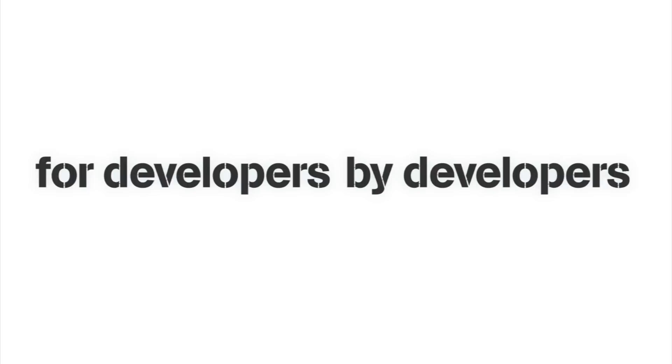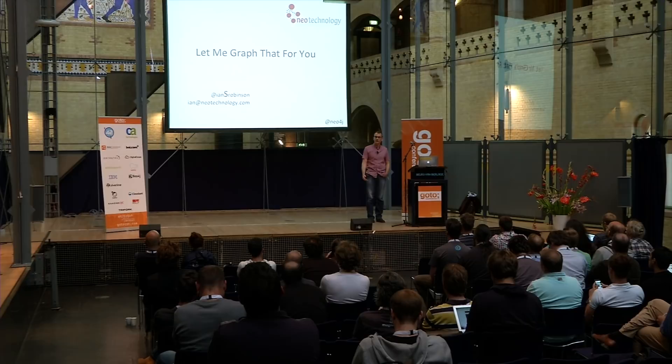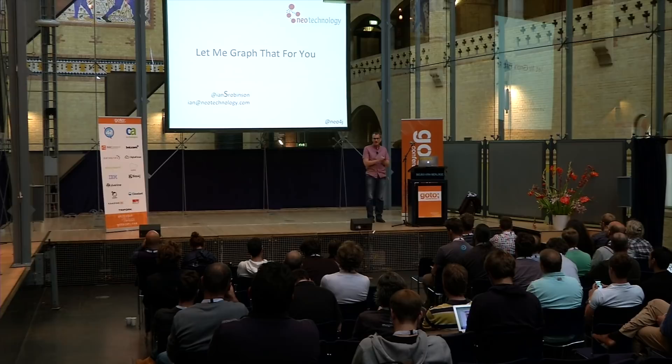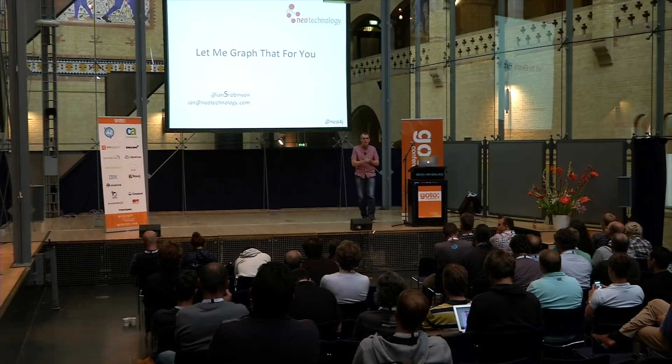My name's Ian Robinson. I'm a developer at Neo Technology, and Neo are the commercial sponsors for Neo4j, which is an open source JVM-based graph database. I'm going to be talking today about graphs and graph technology, graph database technology, and the ways in which it can be used to solve some really interesting data problems and data challenges.